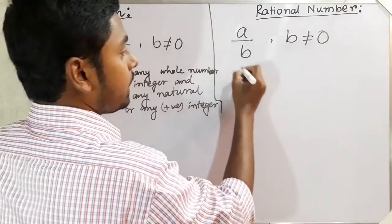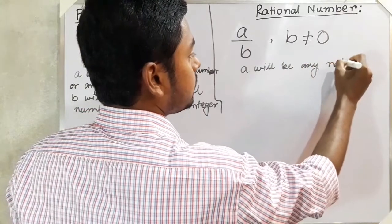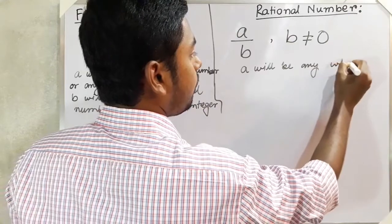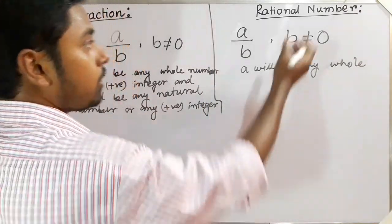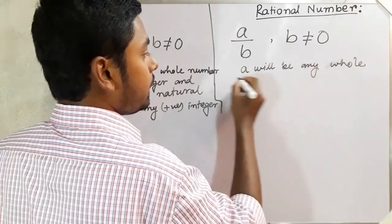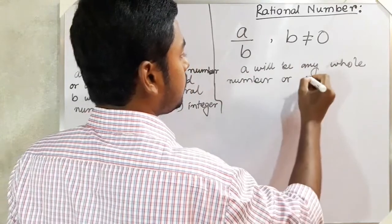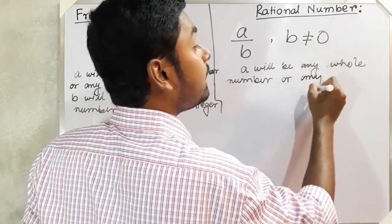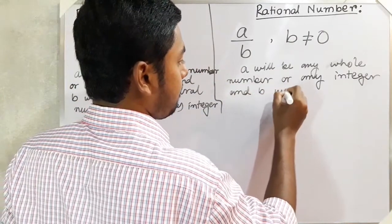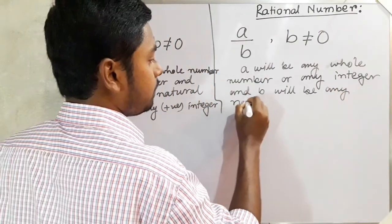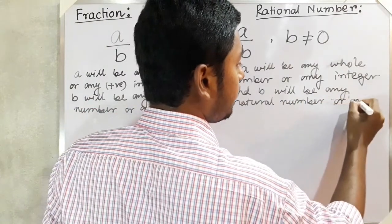For a rational number, a will be any whole number or any integer — not only positive, but any integer, meaning it may be positive or negative. And b will be any natural number or any integer.